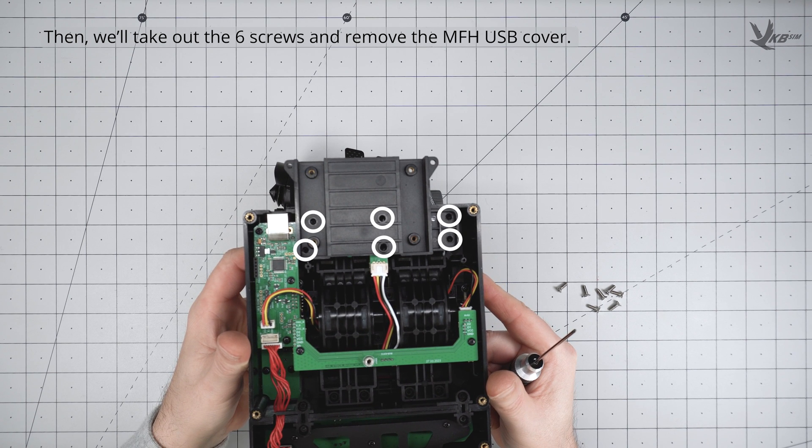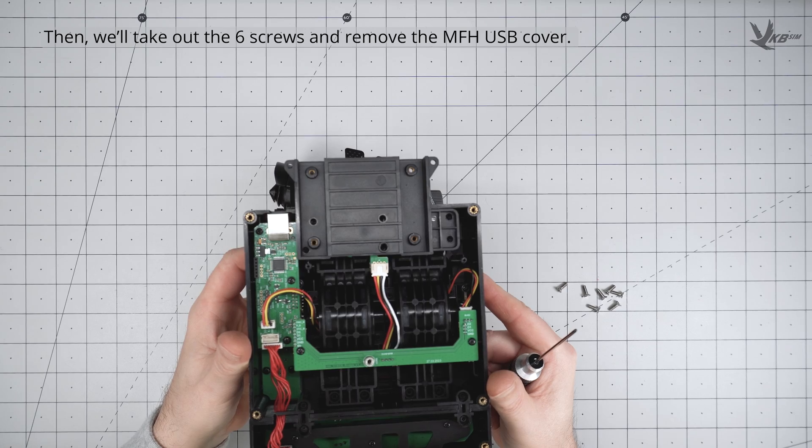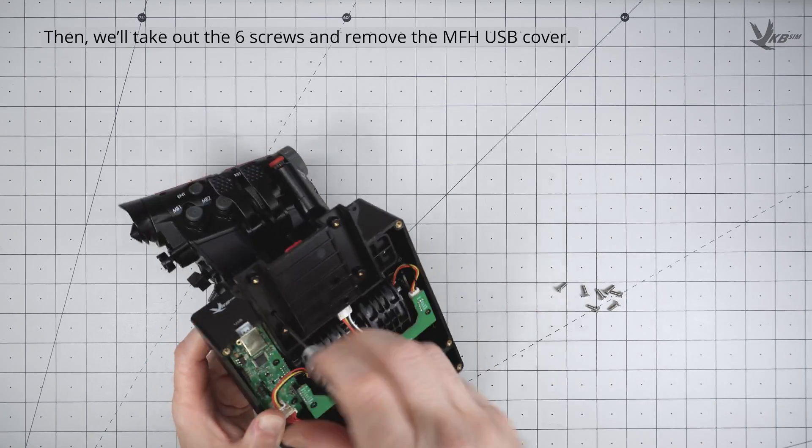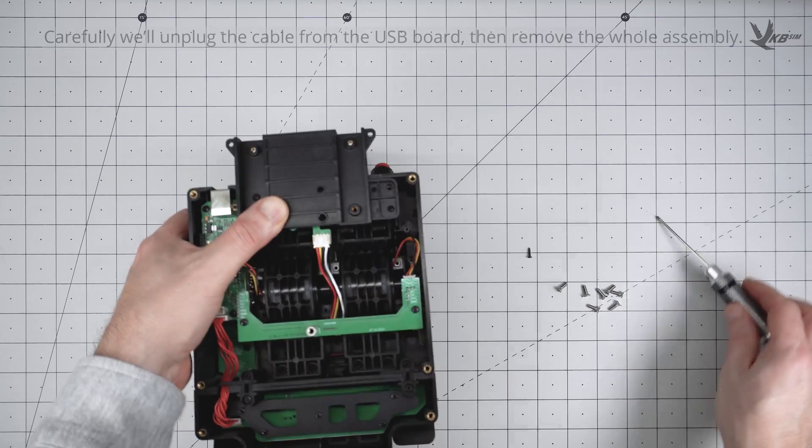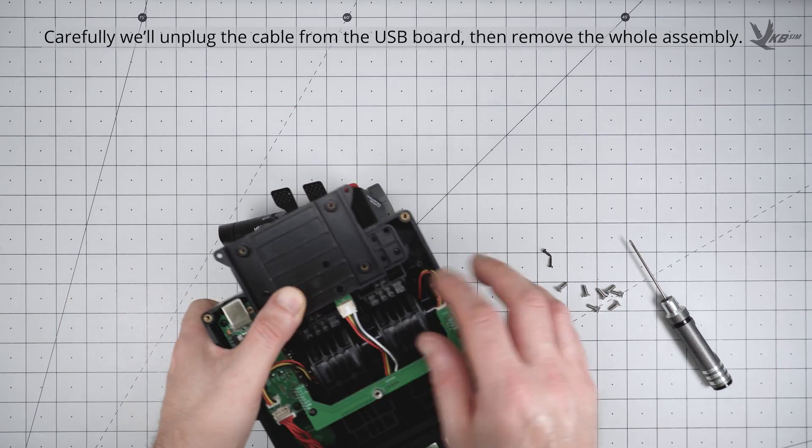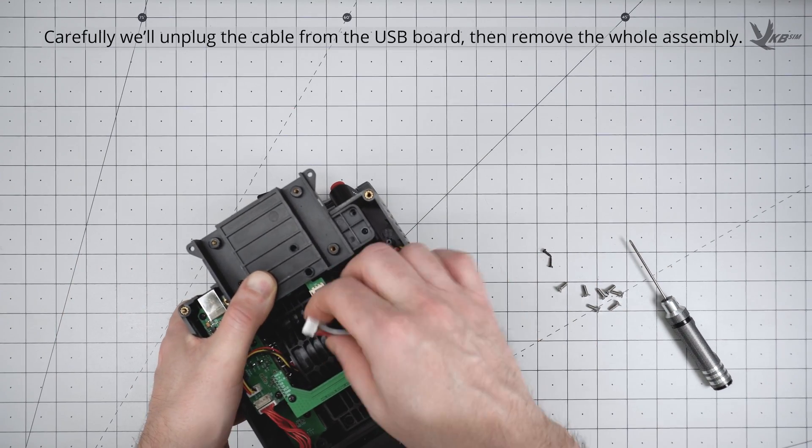Unscrew these screws and then unplug the cable from the USB board to extract the assembly. When disconnecting internal cables, do so gently, avoiding any unnecessary wiggling.